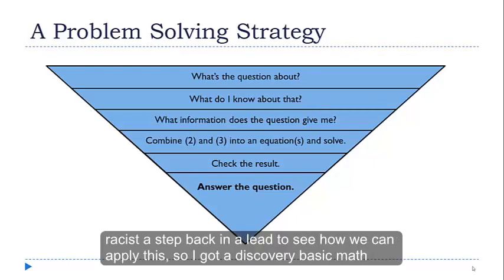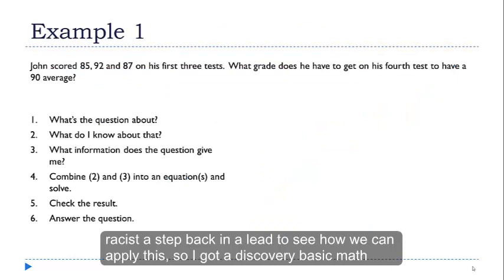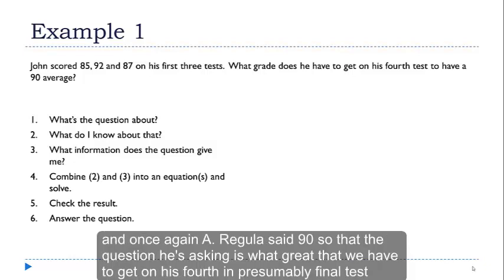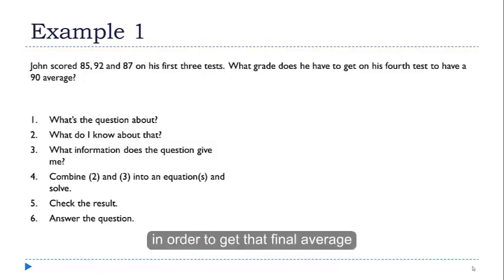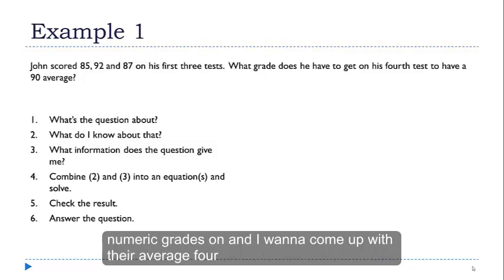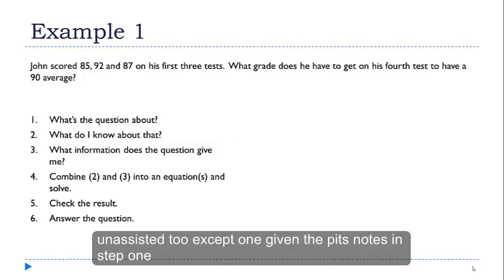So let's take a step back here. Let's see how we can apply this. I've got a very basic math question here. We have this person and he has three test scores, 85, 92 and 87. And he wants to get an A, he wants that 90. So the question is what grade does he have to get on his fourth and presumably final test in order to get that final average? So let's walk through the steps. What's the question about? Just at a very high level, this is a question about averages.